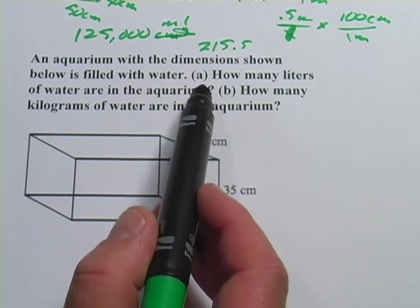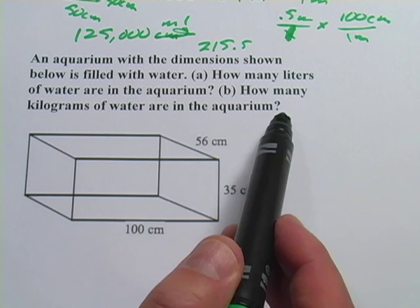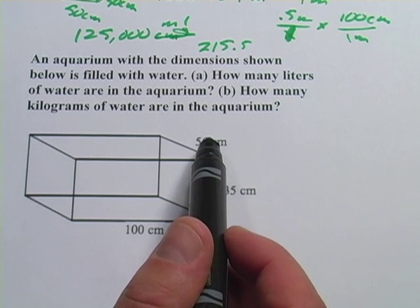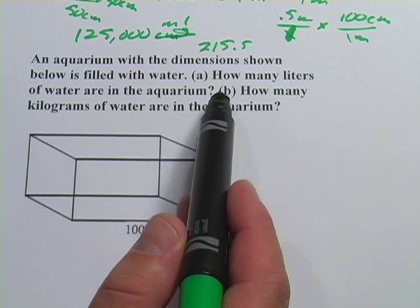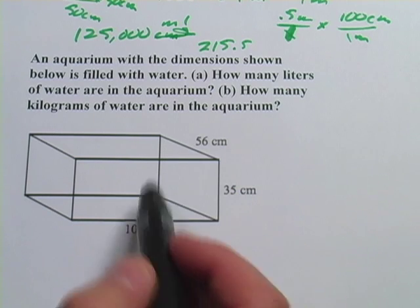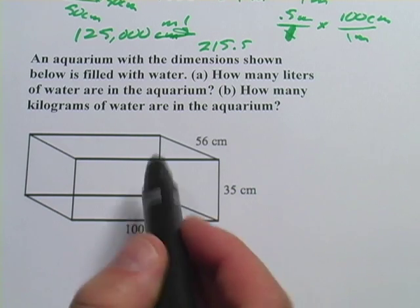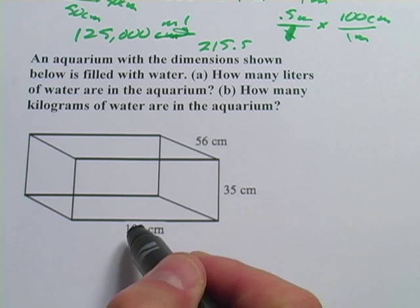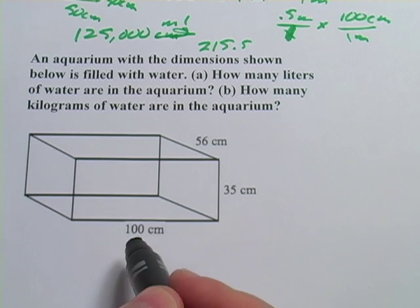Two parts of the question. A, how many liters of water are in the aquarium? And B, how many kilograms of water are in the aquarium? Well we know how to do A now because we know that cubic centimeters is the same as milliliters. And once we get this into milliliters, we can convert it to liters. So let's do that.